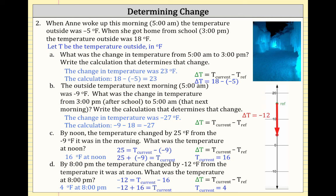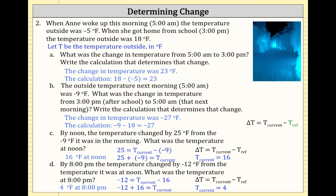To summarize the formula: the change in temperature equals the current temperature minus the reference temperature. With algebra, we can rearrange to get the current temperature equals the change in temperature plus the reference temperature. This was confirmed in both parts C and D: in part C, 25 plus negative 9 equals 16; in part D, negative 12 plus 16 equals 4. The template T_current equals delta T plus T_ref is consistent throughout.